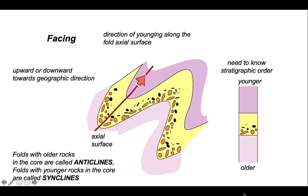Folds with older rocks in the core are called anticlines. Folds with younger rocks in the core are called synclines. It's only if we have the stratigraphic order that we can use these terms.